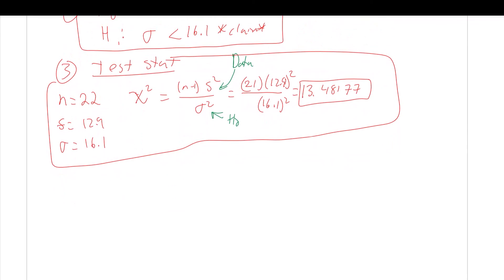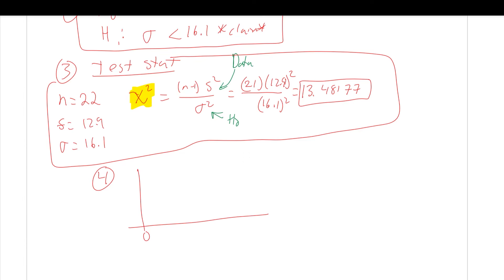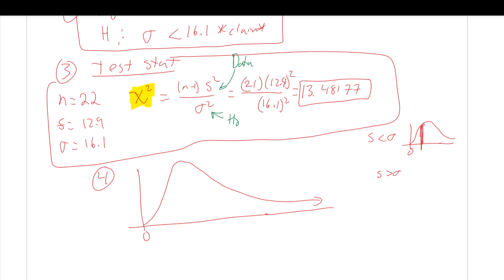Step four: for a chi-squared, the shape is always skewed to the right, starting from zero. Using the rule of thumb: since s is less than sigma, the ratio is smaller and the test statistic is closer to zero — so it should be to the left of the peak. We place 13.48177 to the left of the peak. Since the alternative is 'less than,' we shade to the left. The shaded area is the p-value.